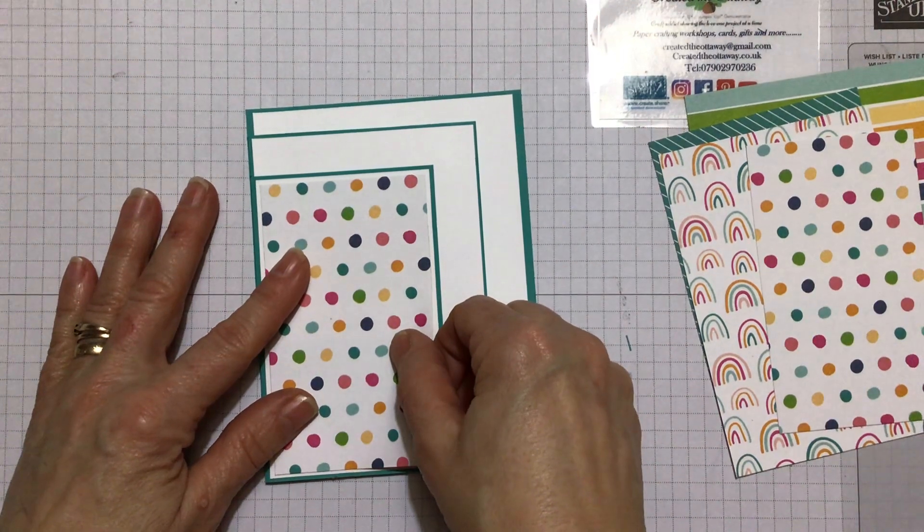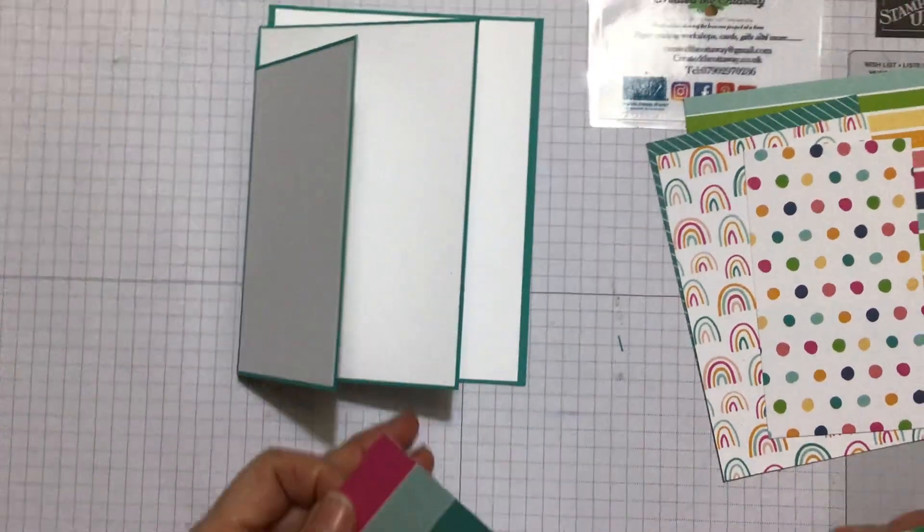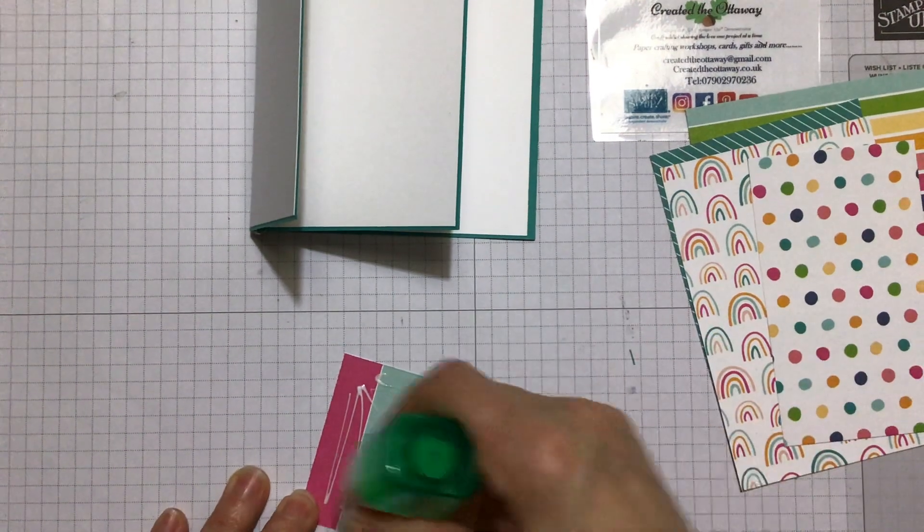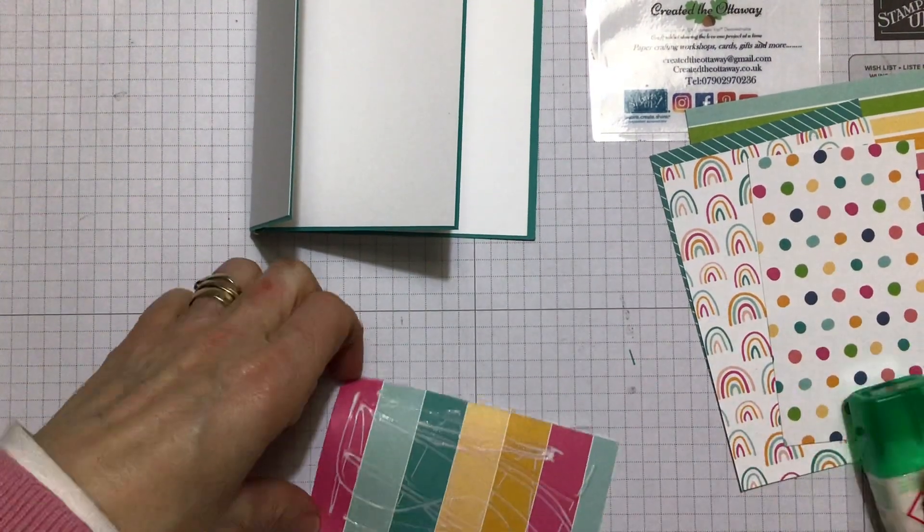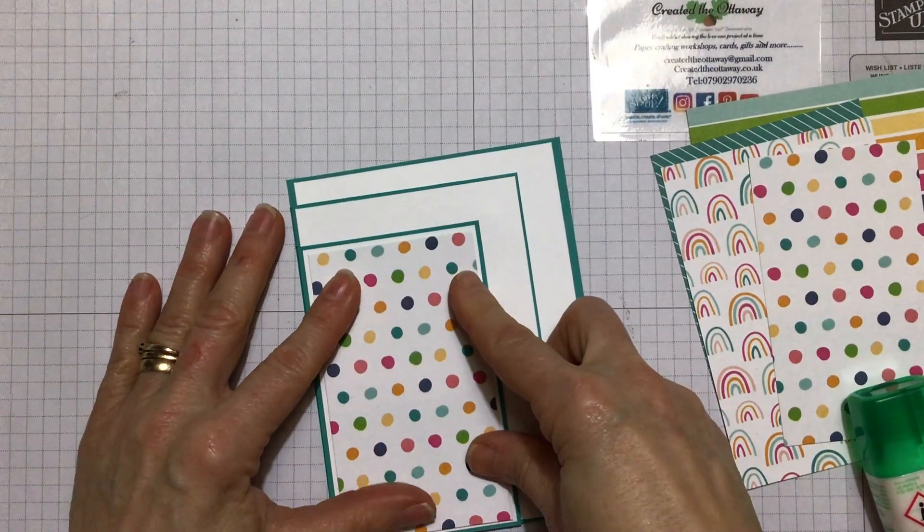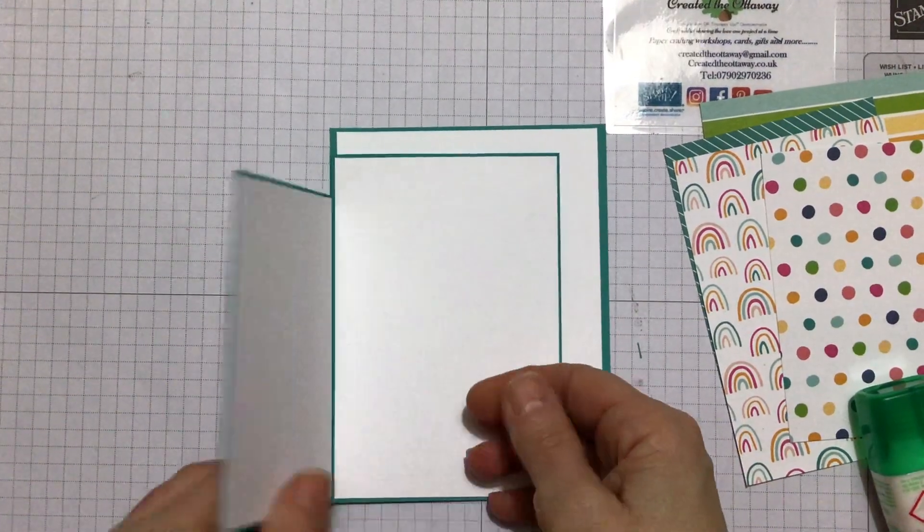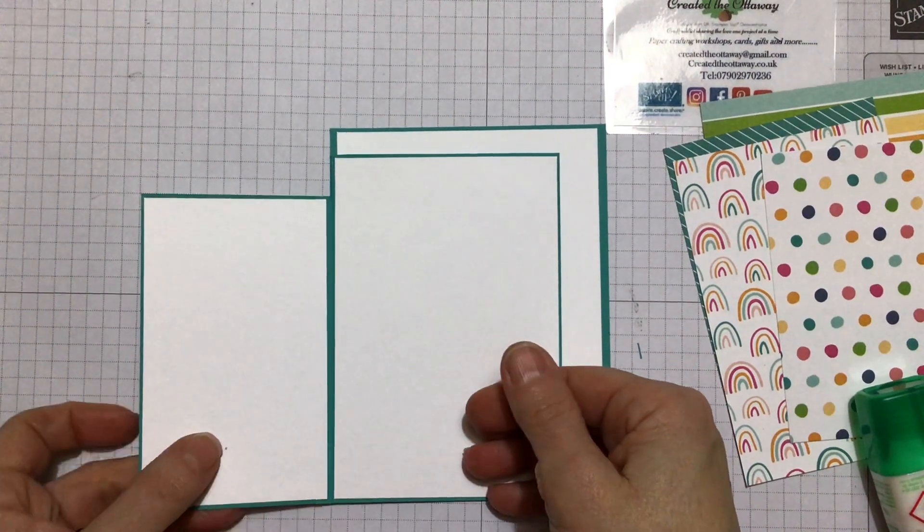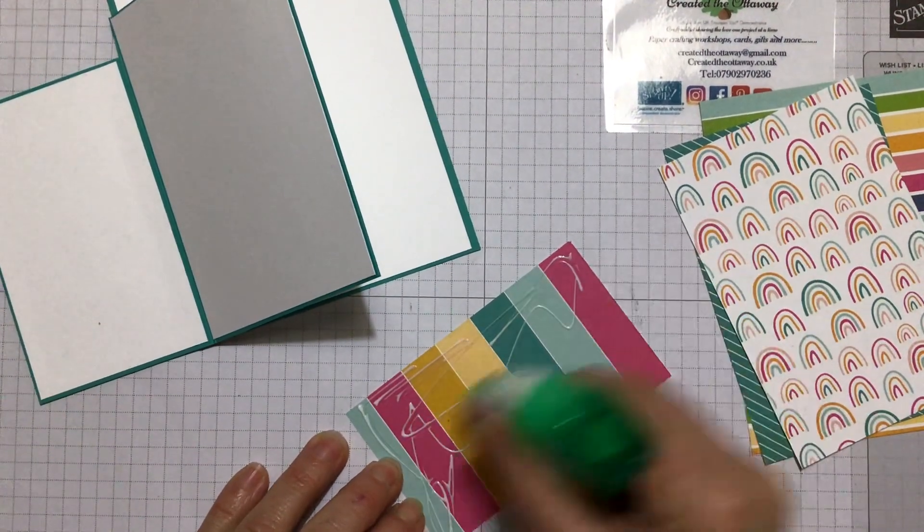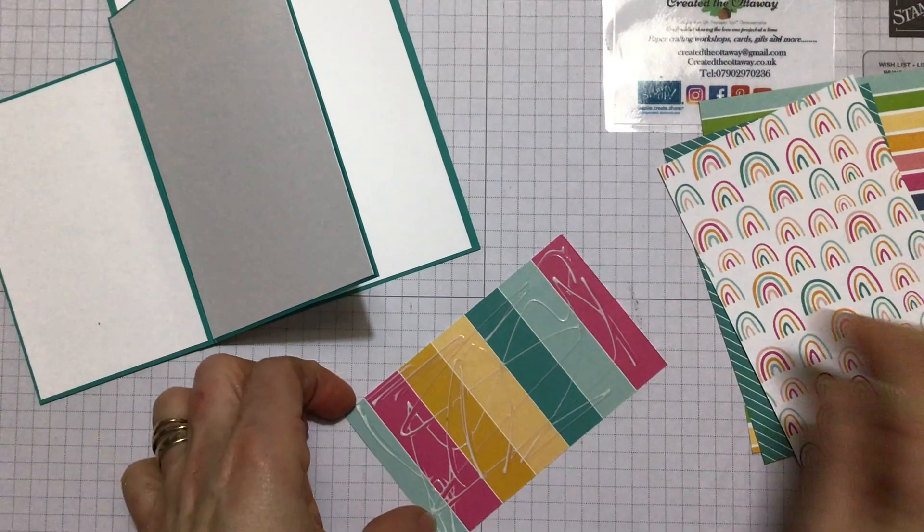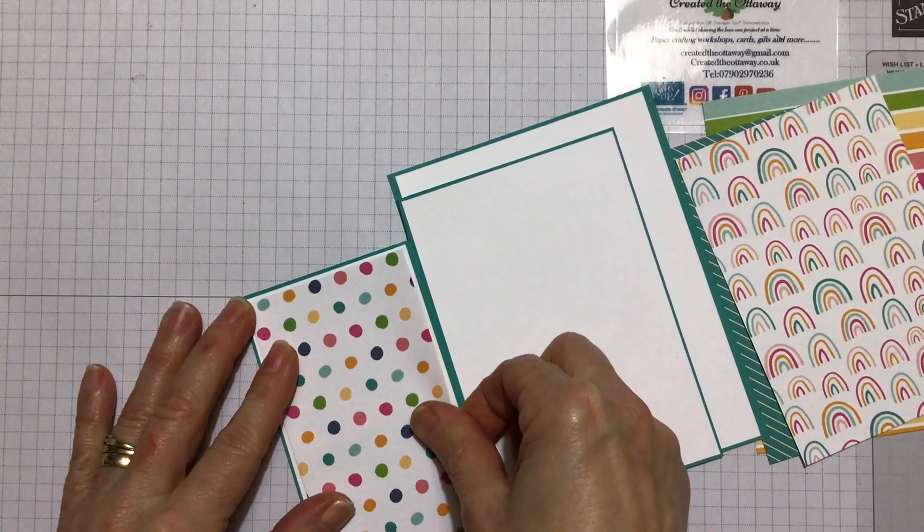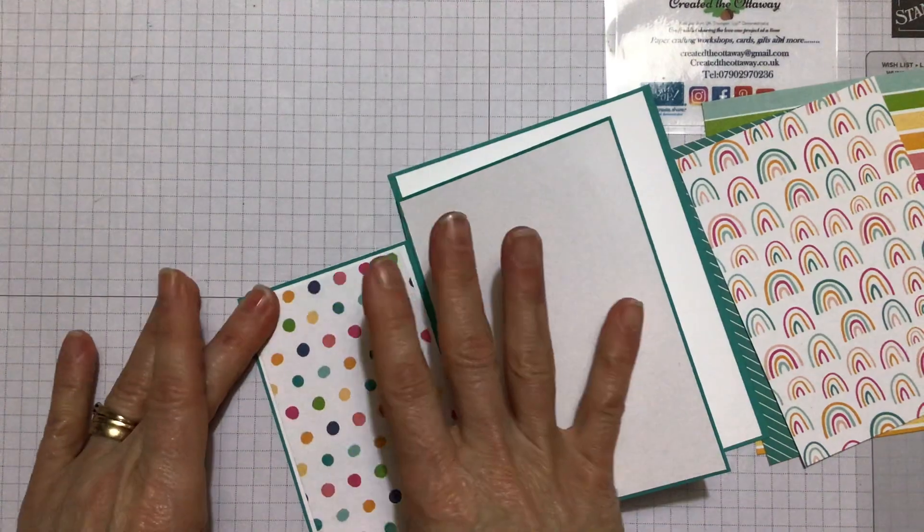So again, this is just an eighth of an inch smaller. Can you see the border that's around it? So this is two and four eighths by four and two eighths. And you need two of these. And I've chosen to do them both the same pattern, because one is on the outside and one is on the inside. So one will always be on the outside. So that's why I've chosen to do them the same. I really like this lovely vibrant paper. Really nice. I like a bit of spot. And then the rainbows just actually lift your spirit when you look at them, don't they?